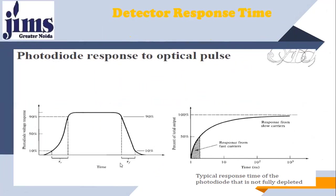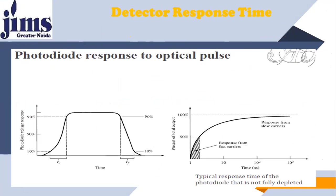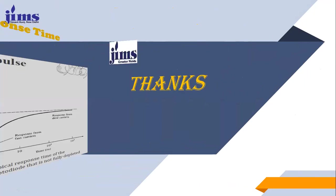This is the photodiode response to an optical pulse input. Initially you get very little current because many of the charge carriers are not collected on time — some carriers are slow. After some time, the output reaches 100% of the full photocurrent. So you have to wait a little bit of time to get the full output from a detector, because only when all the charge carriers are collected at their respective ends do you get the total current. That's all — thank you very much.